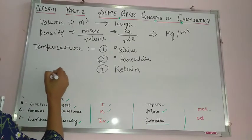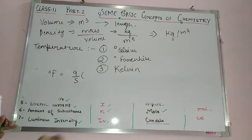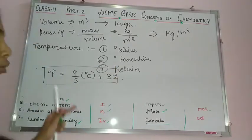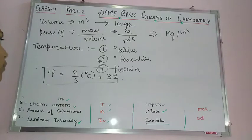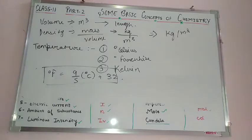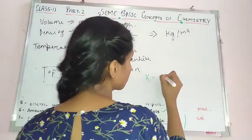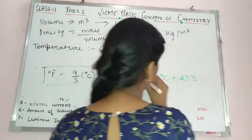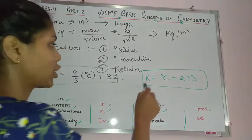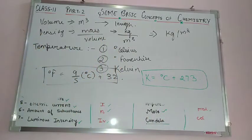To convert temperatures: the formula for degree Fahrenheit is (9/5 × degree Celsius) + 32. So if we know the temperature in degree Celsius, we can convert it to Fahrenheit using this formula. To convert degree Celsius to Kelvin: Kelvin = degree Celsius + 273. If we have temperature in Kelvin, we first convert to Celsius, then to Fahrenheit.